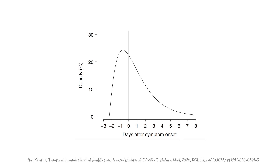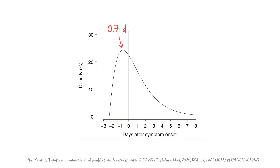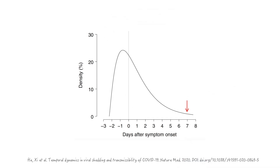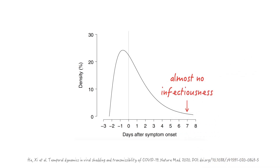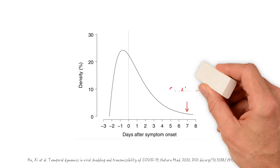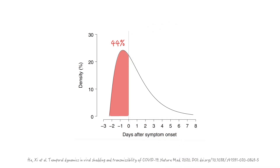They found that infectiousness starts 2.3 days before symptom onset, that patients are most infectious 0.7 days — around one day — before symptom onset, and that seven days after symptom onset, there was very little infectiousness going on anymore. They also found that 44% of infections occurred in the pre-symptomatic phase, which is really bad because it makes containment very hard.